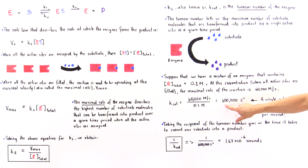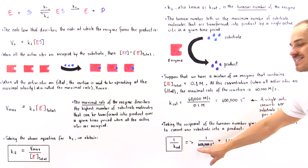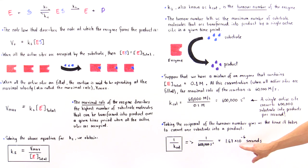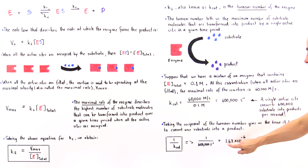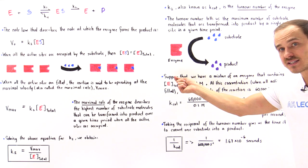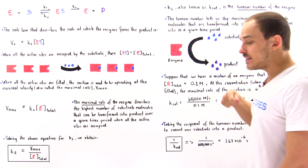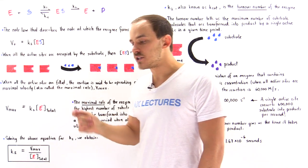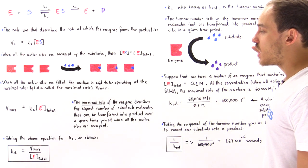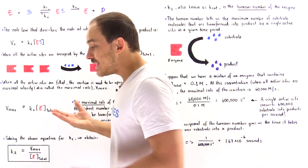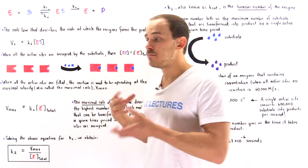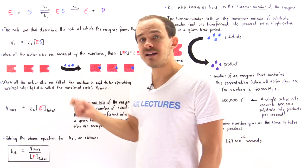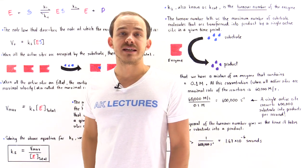For carbonic anhydrase: 1 divided by 600,000 s⁻¹ gives 1.67 × 10⁻⁶ seconds — the time it takes carbonic anhydrase to transform a single substrate molecule into a single product. The turnover number Kcat and Vmax are important indicators of how enzymes affect reaction rates and can be used to describe the enzyme's action on a particular reaction.